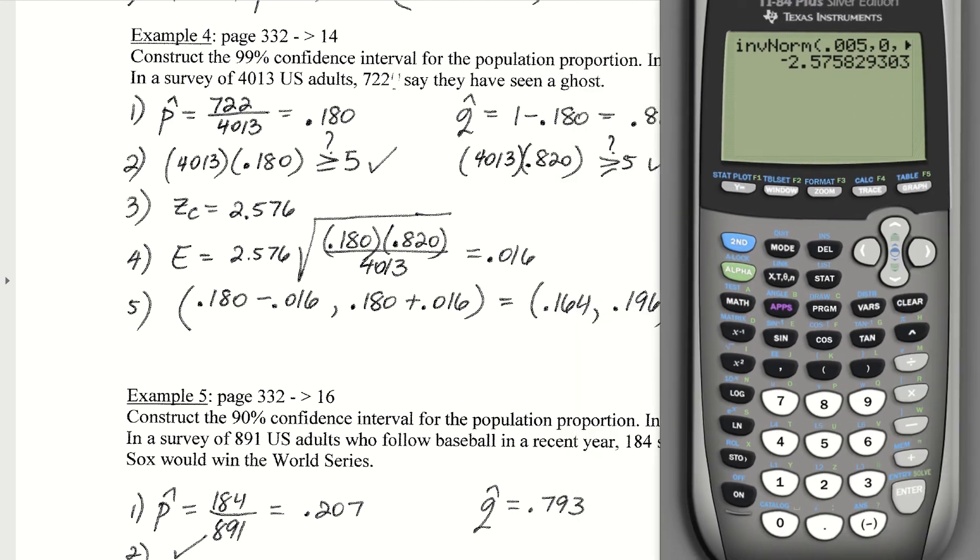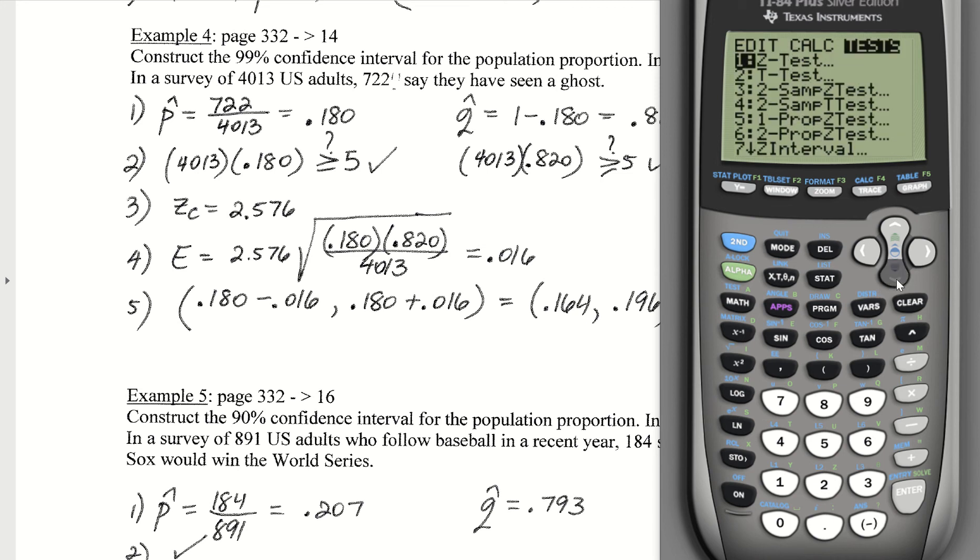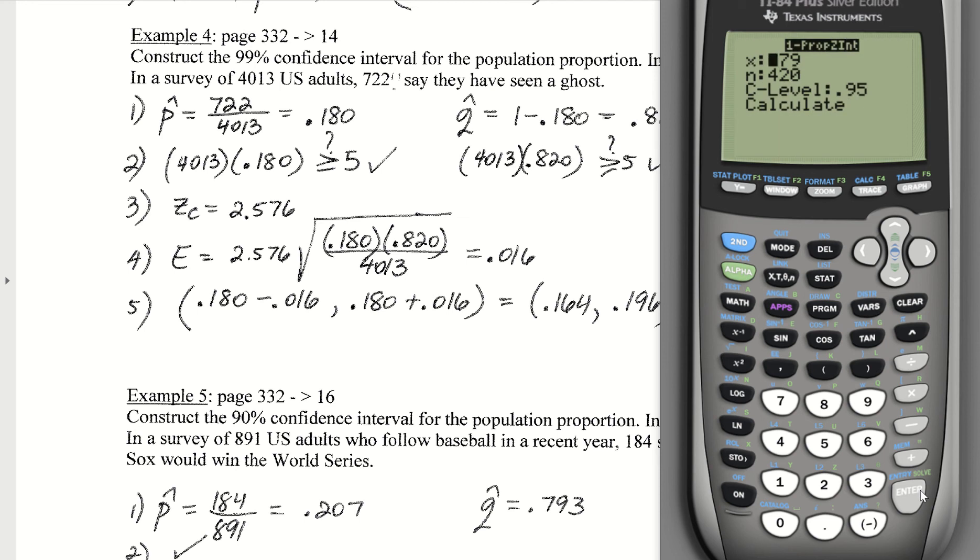We also could have found this interval by using our 1-prop-z-interval command. If I go to stats, go over to tests, go down to option A, that's one proportion, 1-prop-z-interval. I would first enter X, which is the number that believe they've seen a ghost. That's 722.